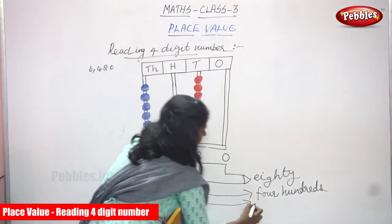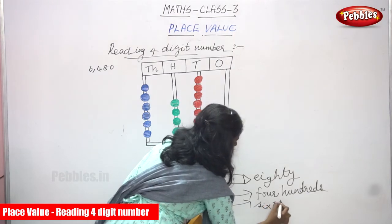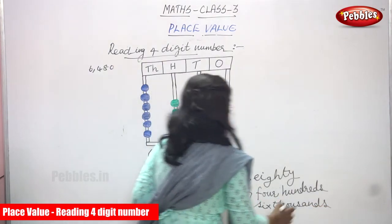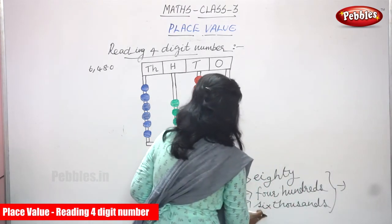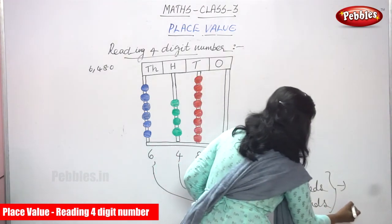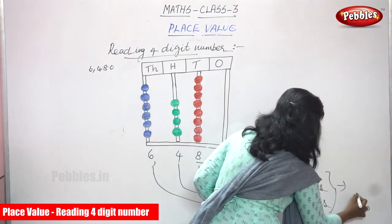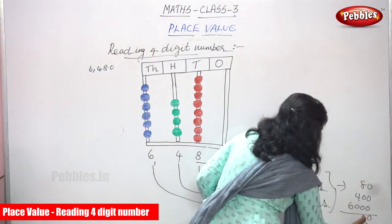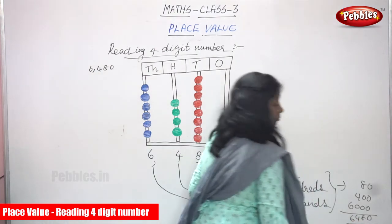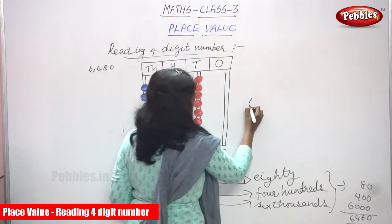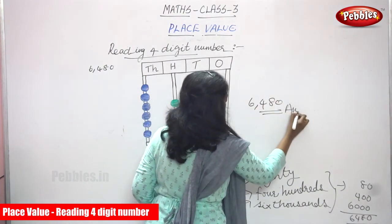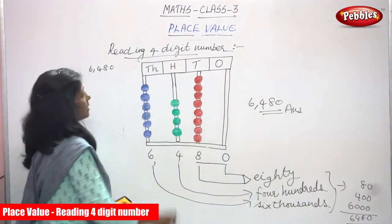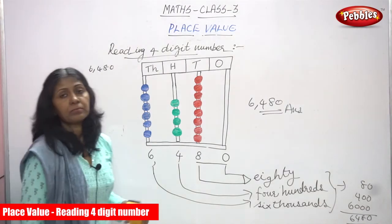Then six thousands. So the answer is: six thousand four hundred and eighty. That is six thousand, then four hundred, then eighty. The total is six thousand four hundred and eighty. This is the correct answer, read using the abacus method.